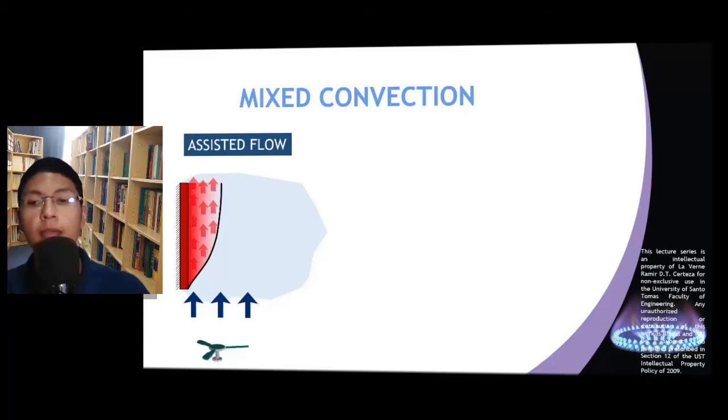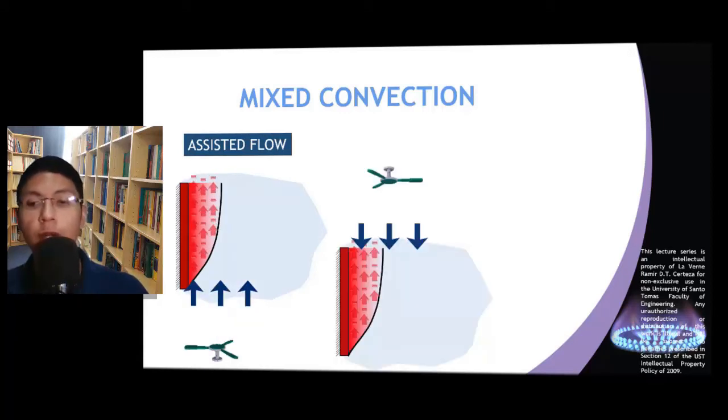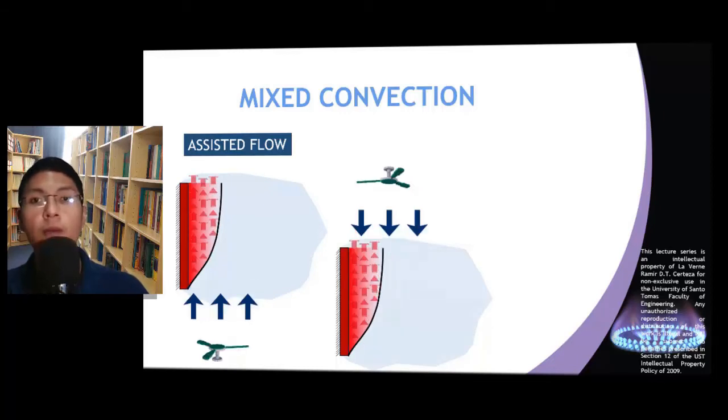On the other hand, when these two directions are opposite to each other, then we call this type of mixed convection as opposing flow.